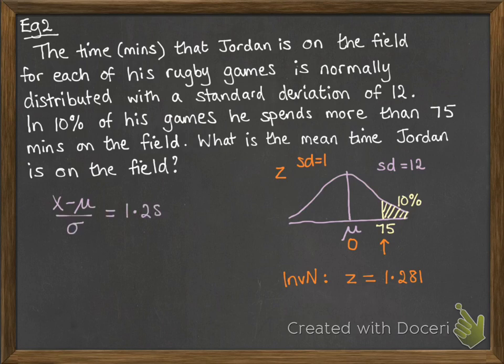Now, that means x minus μ over σ equals 1.281. So we'll replace that x with the 75 that we know it is, replace σ with the 12 from our situation, and then do some rearranging. So 75 minus μ is going to be 1.281 times 12. That becomes 15.372.